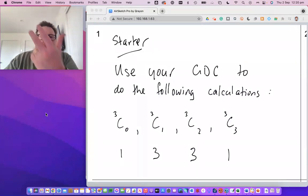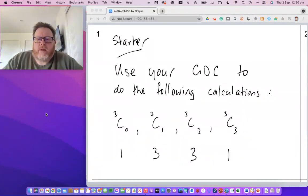3C2 gives you 3 as well and 3C3 will give you 1. If I've got 3 and I'm choosing 3 and the order doesn't matter, there's only one way I can do that. Let's pick all 3. So you've got 1, 3, 3 and 1. Now, do those numbers look familiar to you at all? I hope they do. Have a think about it, pause the video again if you need to. Where have you seen those values before?